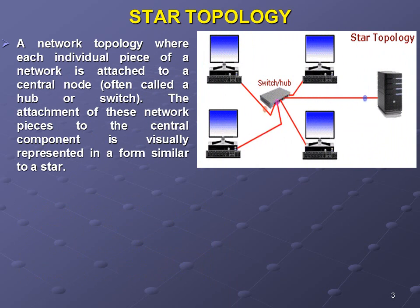Star topology is the most well-known and preferred topology used by organizations. In a star topology, each individual piece of the network is attached to a central node, often called a hub or switch. The attachment of these network pieces to a central component is visually represented in the form of a star.